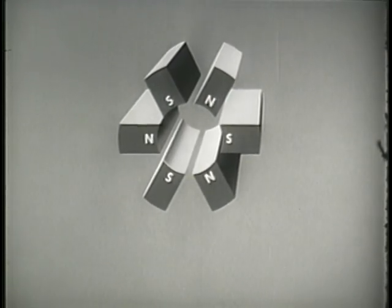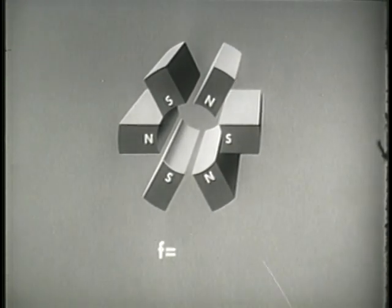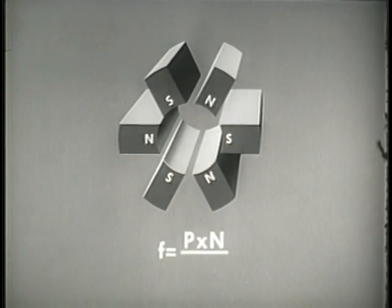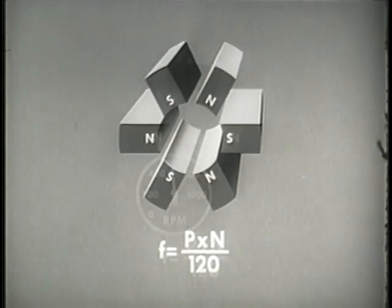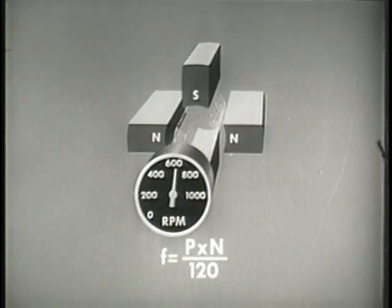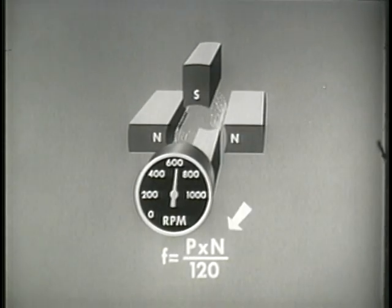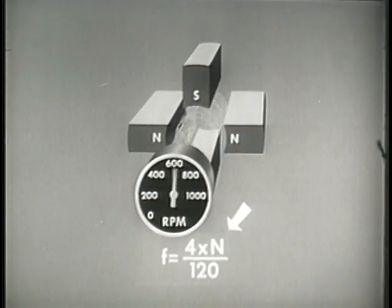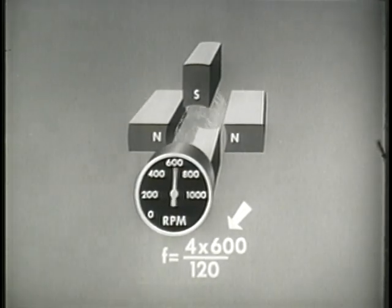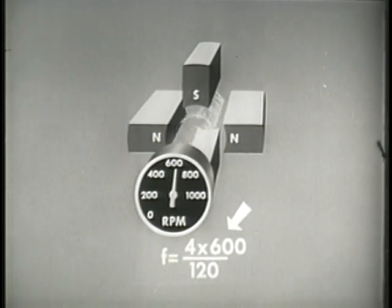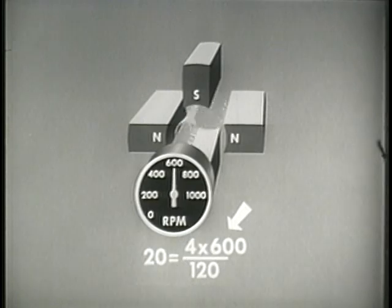The formula for frequency in an AC generator can be expressed as follows: F, which is frequency in cycles per second, equals P, the number of poles, times N, revolutions per minute, over 120. We can find the frequency of a four-pole AC generator whose speed of rotation is 600 revolutions per minute by substituting four for P and 600 for N. Here the frequency is 20 cycles per second.